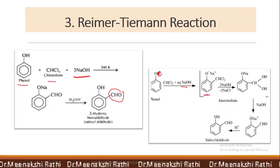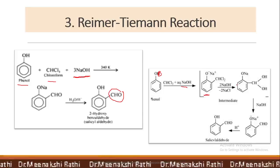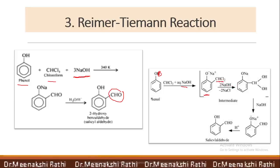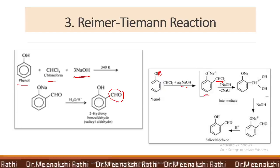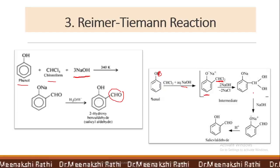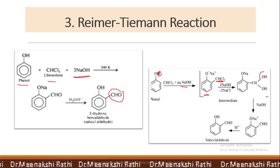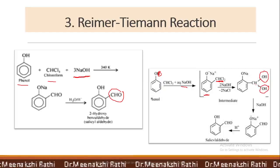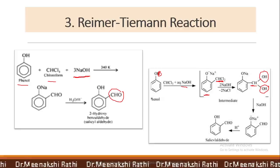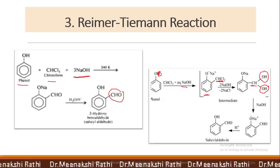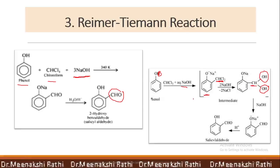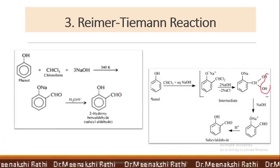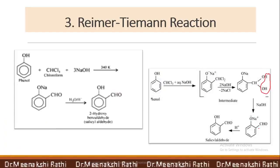This sodium phenoxide salt again reacts with NaOH. The two chlorine atoms attached to the same carbon — geminal dihalides — get replaced with two OH groups. Always remember, when two OH groups are attached to the same carbon atom, it is unstable and immediately loses a water molecule. When water is removed from the two OH groups, we get an O-Na and a CHO group.